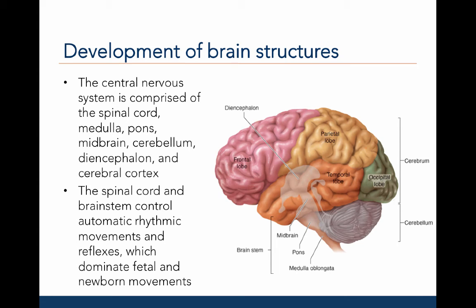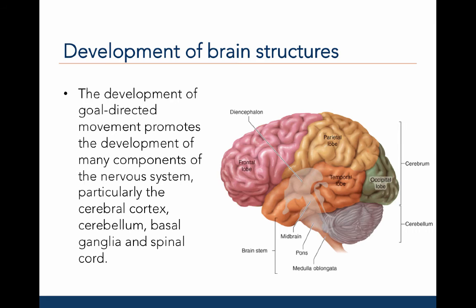The central nervous system is comprised, from the bottom up, of the spinal cord, medulla, cerebellum, pons, midbrain, diencephalon, and cerebral cortex. The spinal cord and brainstem — comprised of the medulla, pons, and midbrain — control automatic rhythmic movements and reflexes, which dominate fetal and newborn movements. The development of goal-directed movement during infancy and childhood promotes development of many components of the nervous system, particularly the cerebral cortex, cerebellum, basal ganglia, and spinal cord.